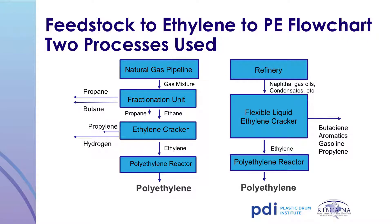The second methodology is mainly used in the Far East and Europe. In this process, the feedstock is typically naphtha, gas, oil, or a similar refinery-based product. The feedstock is processed in an ethylene cracker, which results in ethylene, which is then polymerized in a polyethylene reactor to form polyethylene. The final product from both processes is the same, and the choice is based on the availability of the base material — natural gas or refinery-based feedstock.